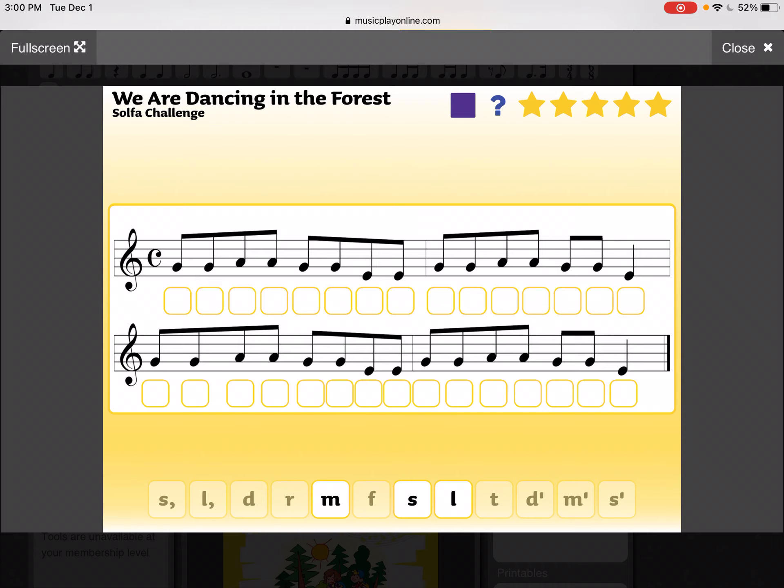So I have to look at the notes on the staff and try to remember what's a so, what's a la, what is a me. Remember that so and me you can see is a skip apart, so if those are the ones on the lines, then la is a step higher—that's going to be every note that's on a space.